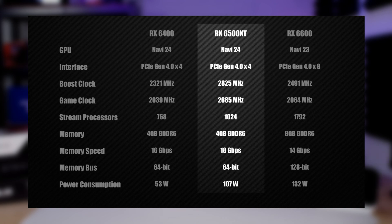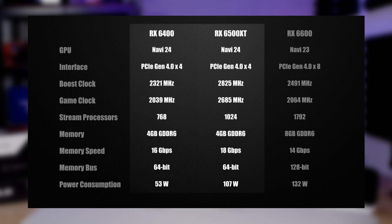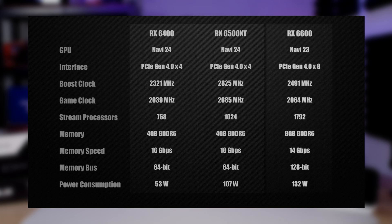The next one in line is the RX 6500 XT, which is probably the one that's a little bit out of place in the lineup because it doesn't have any of the benefits of the RX 6400. It requires additional power, has a PCIe generation limitation meaning anything less than PCIe Gen 4 will run into performance issues, and it also only has four gigabytes of RAM.